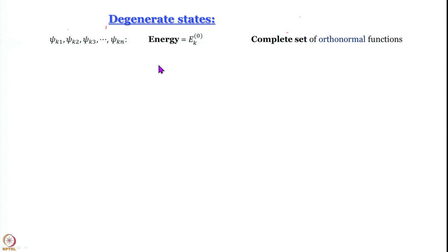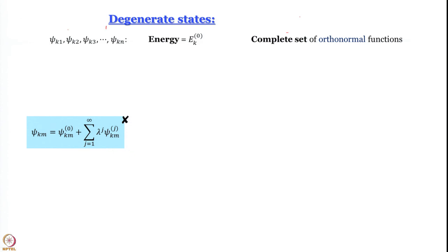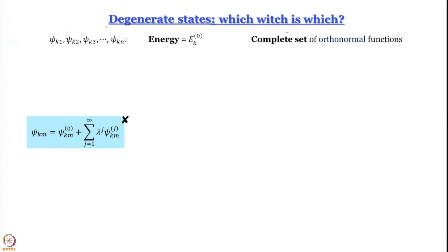The problem is that we are not allowed to write ψ_km as ψ_km⁰ plus the correction series, because all these wave functions are indistinguishable from each other — they all have the same energy, and energy is the experimentally measurable quantity. We encountered a similar situation in multi-electron atoms: with two electrons we did not know whether electron 1 is in the 1s orbital and electron 2 in 2s, or vice versa.